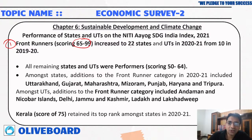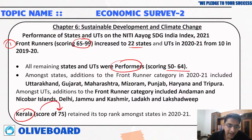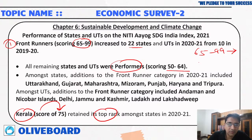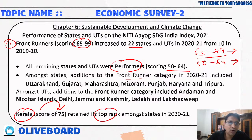In terms of performance categories: states with a score of 65 to 99 are called front runners, and they have increased to 22 states. States with a score between 50 to 64 are called performers. States with a score below 50 are called aspirants. A score of 100 means the goal has been achieved. Among coastal states, Odisha and Andhra Pradesh are front runners.